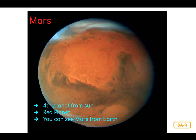Mars is the fourth planet from the Sun. Mars is named after the Roman god of war. Mars is often referred to as the red planet because of its color. Its red color makes Mars unique. You can see Mars from Earth, and even without a telescope you can identify it by its reddish tint.